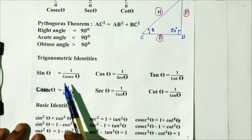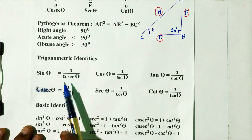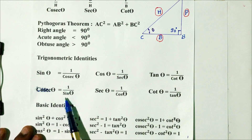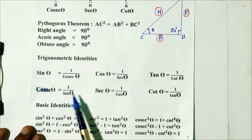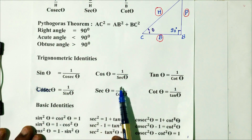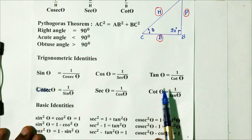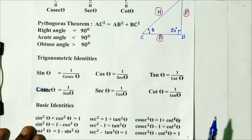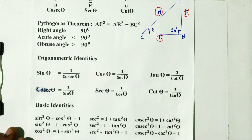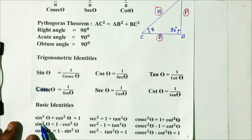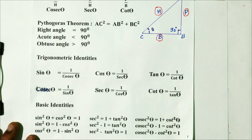This is the reciprocal identity. Sine is 1 divided by cosecant; cosecant is 1 by sine. Cos is 1 by sec; sec is 1 by cos. Tan is 1 by cot; cot is 1 by tan. The basic identity: sin²θ + cos²θ = 1.